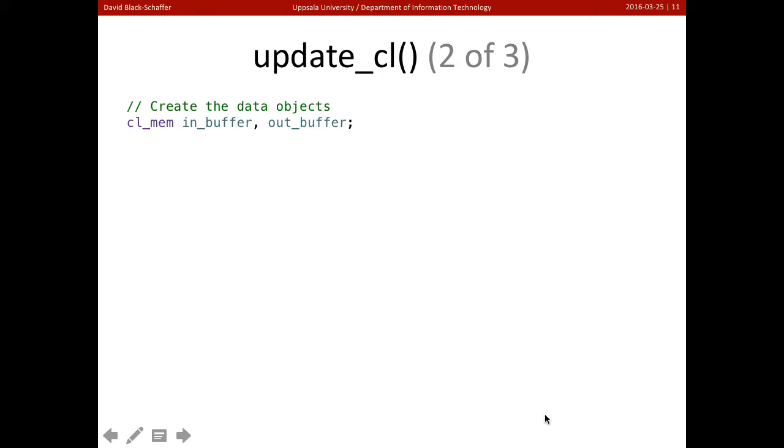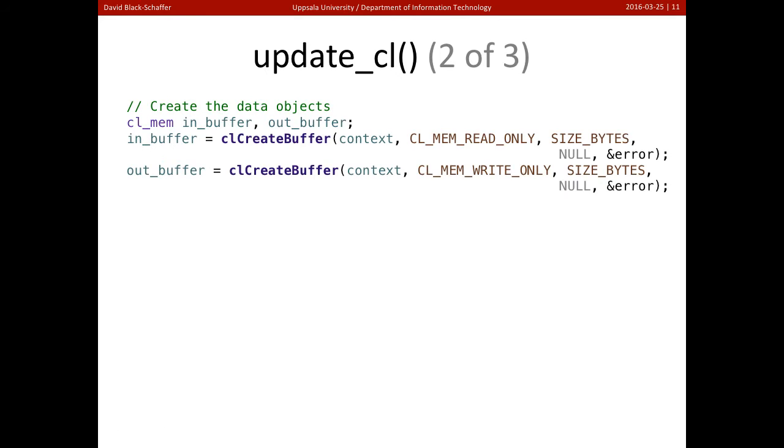Well, now we need to create the buffer object so we can get the data to the device in OpenCL. We're going to have an in buffer and an out buffer. We're going to go ahead and create both of those. So we're going to create them for our context with CL create buffer, and the in buffer is going to be read only, and the out buffer is going to be write only, and we're going to create them at the correct size.